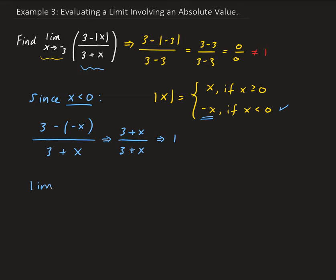So the limit as x approaches negative 3 of 1 — the limit of a constant is just that constant — gives us 1. That is the solution to this limit. The key to this problem is understanding how to apply the definition of absolute value. Since x is getting arbitrarily close to negative 3 from both sides, we use the minus x part of the definition, replace absolute value of x with negative x, simplify, and get our limit of 1.